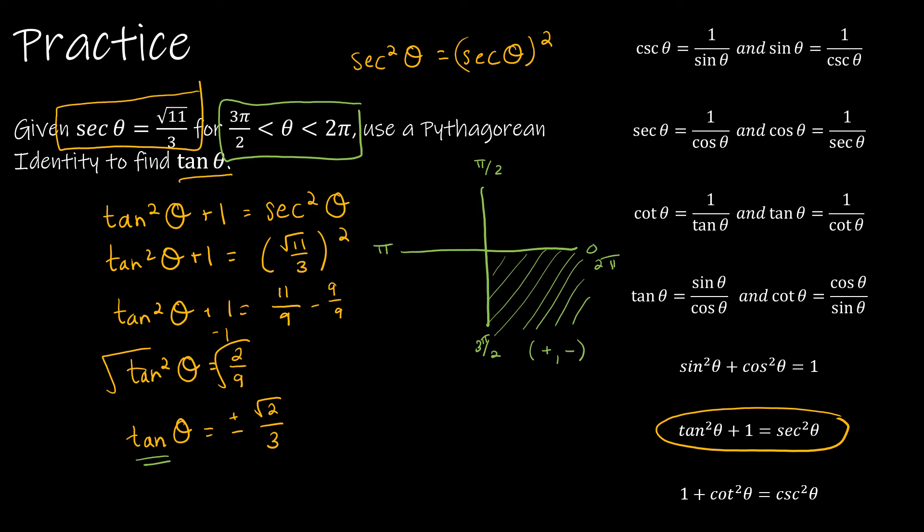then I'm going to have some negative value divided by some positive value, which is going to give me a negative result. So what is my answer? Tangent theta is going to be negative radical 2 over 3.